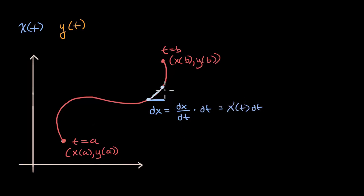And then our change in y is going to be the same idea. Our change in y, our infinitesimally small change in y when we have an infinitesimally small change in t. Well, you could view that as your rate of change of y with respect to t, times your change in t, your very small change in t, which is going to be equal to, we could write that as y prime of t dt.